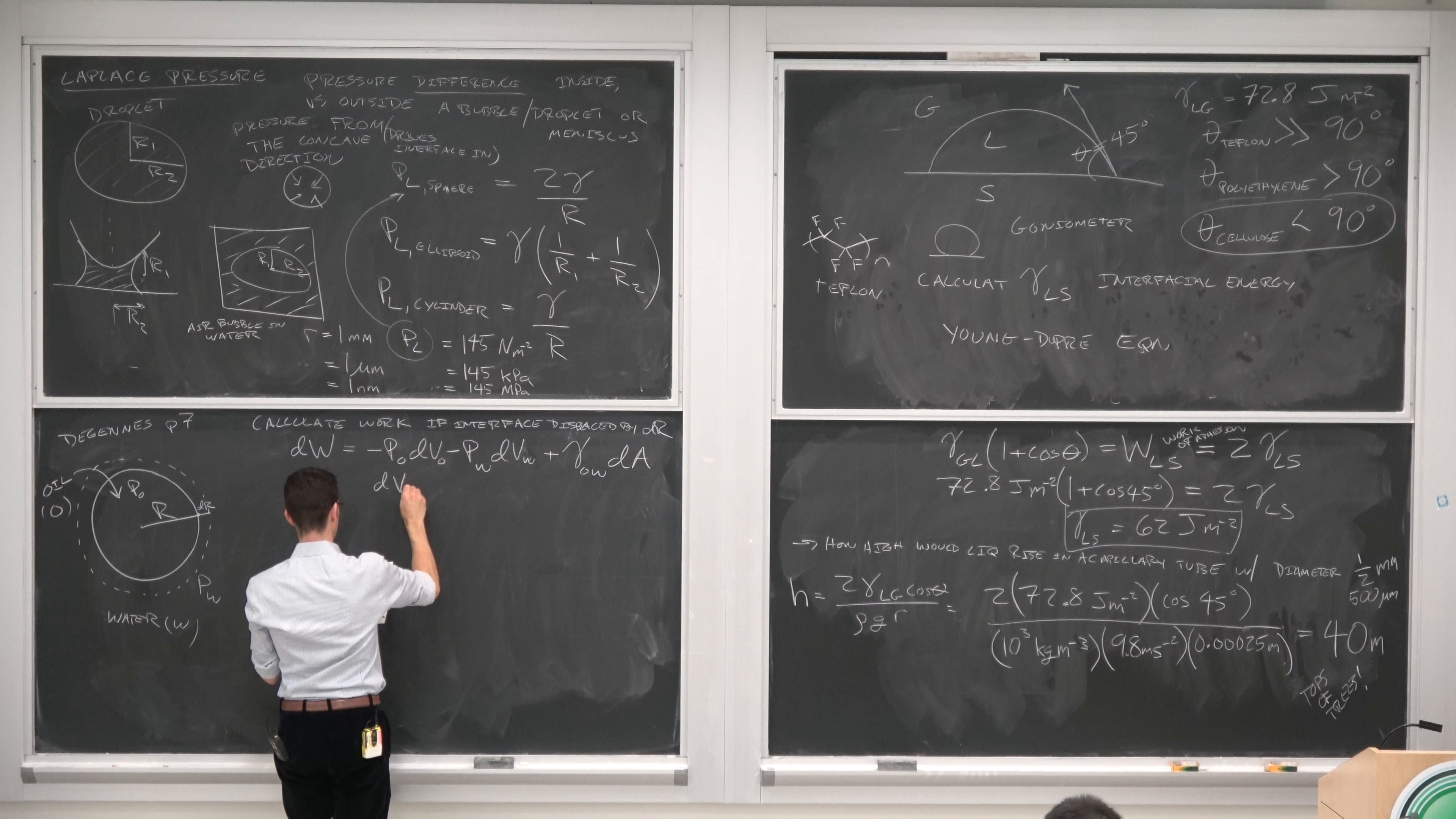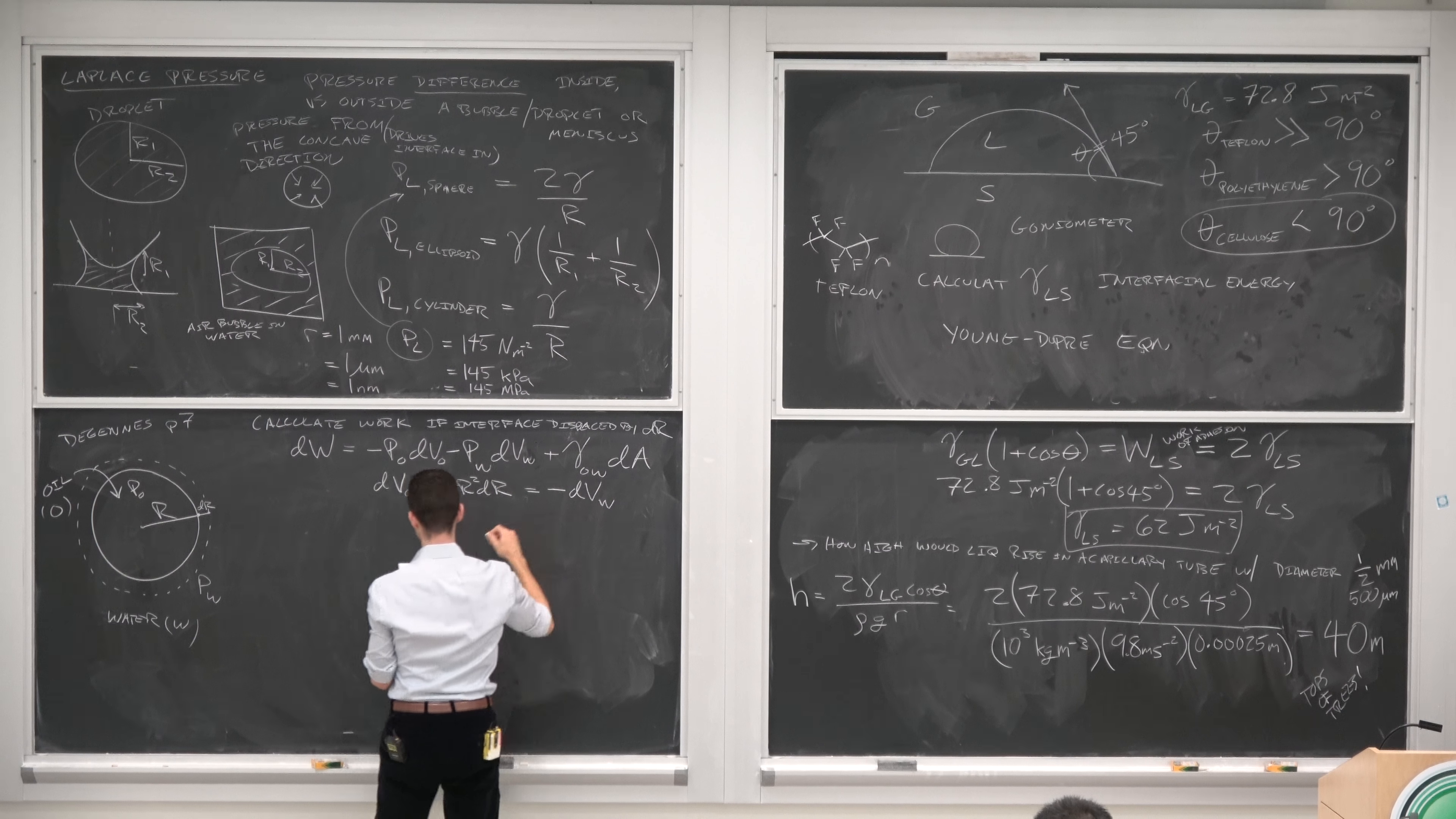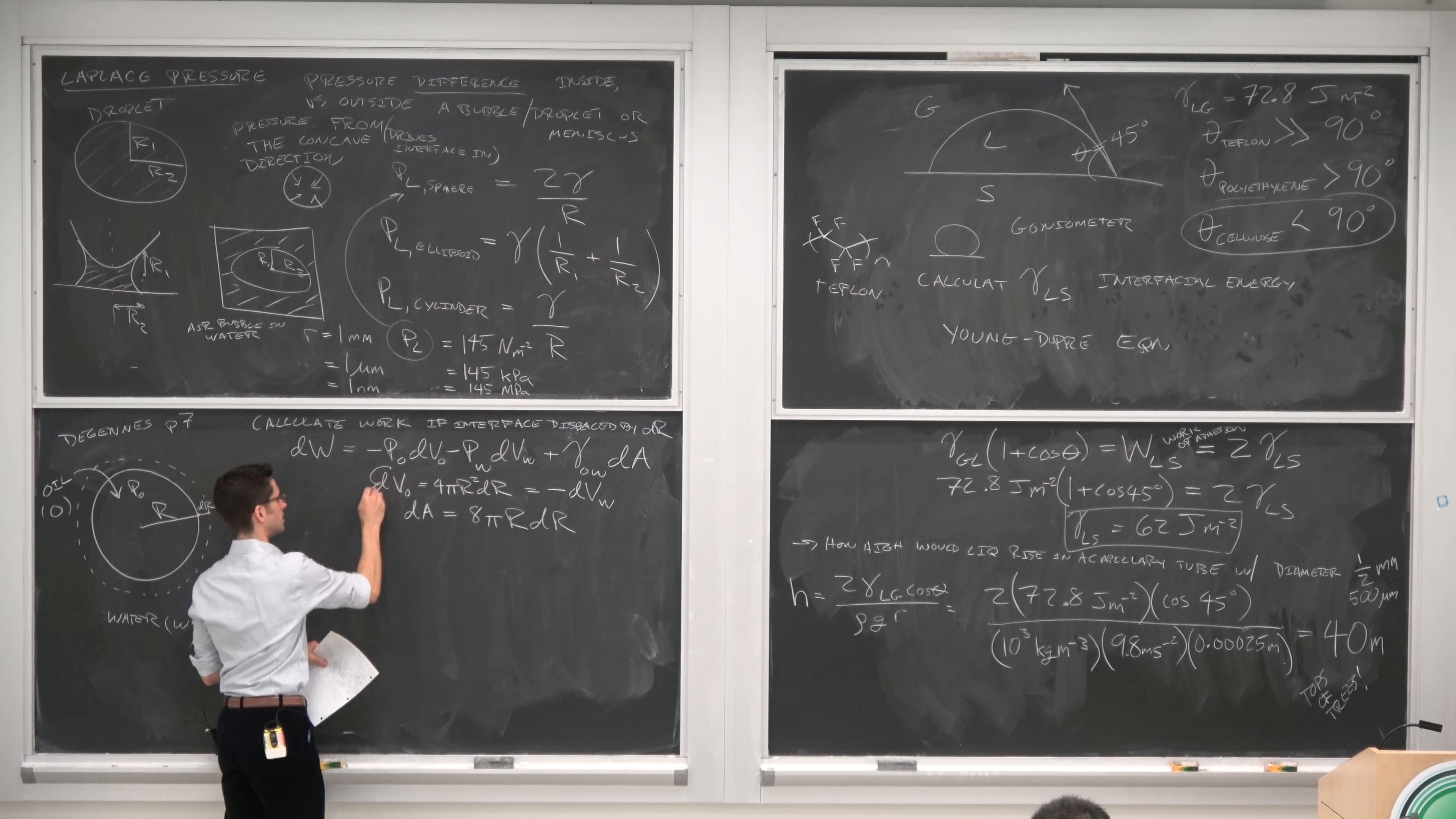So dV of oil is 4 pi R squared dR, which is the derivative of the volume with respect to radius, and this is going to equal minus dV W because as one expands the other contracts. And our dA is going to be 8 pi R dR, which is the derivative of the surface area of a sphere.